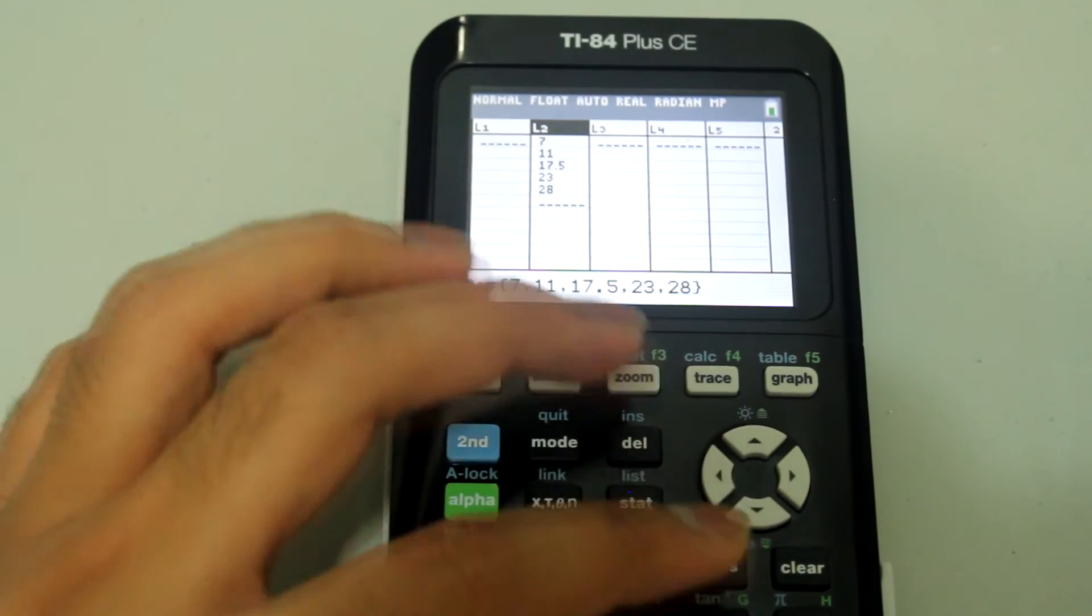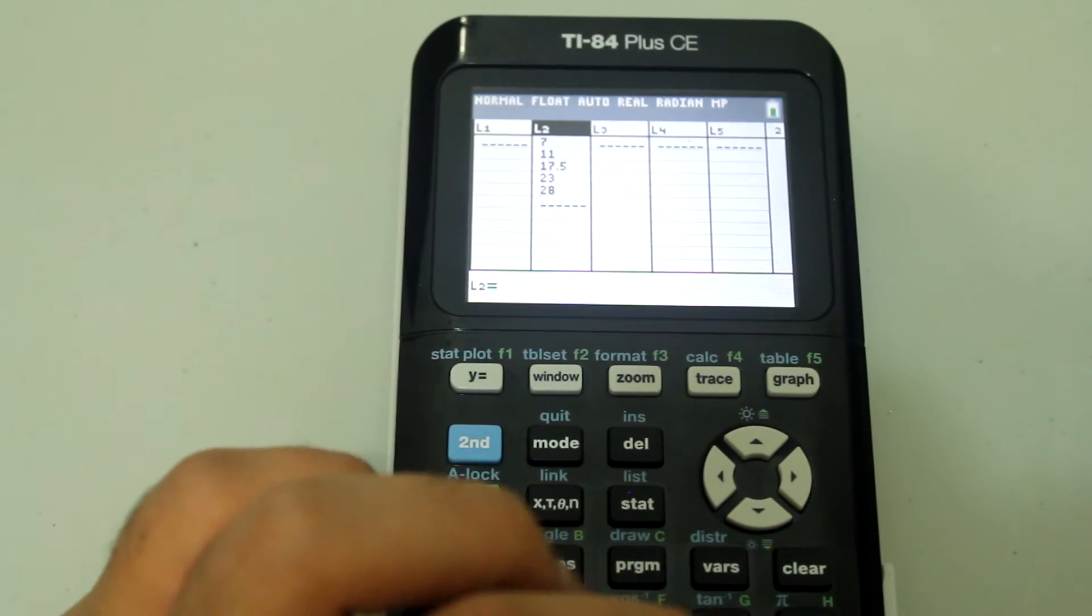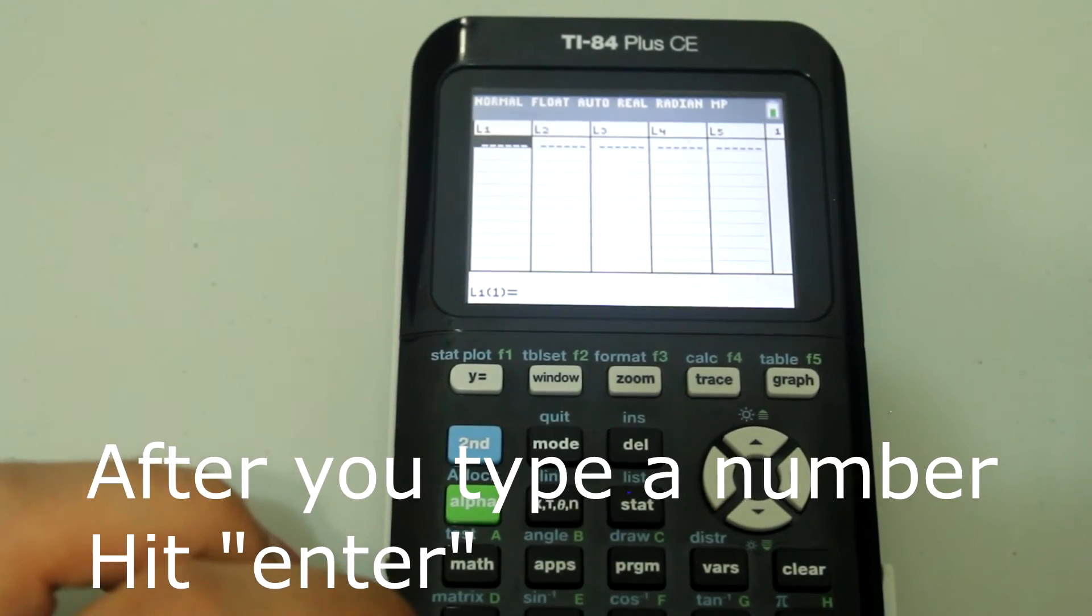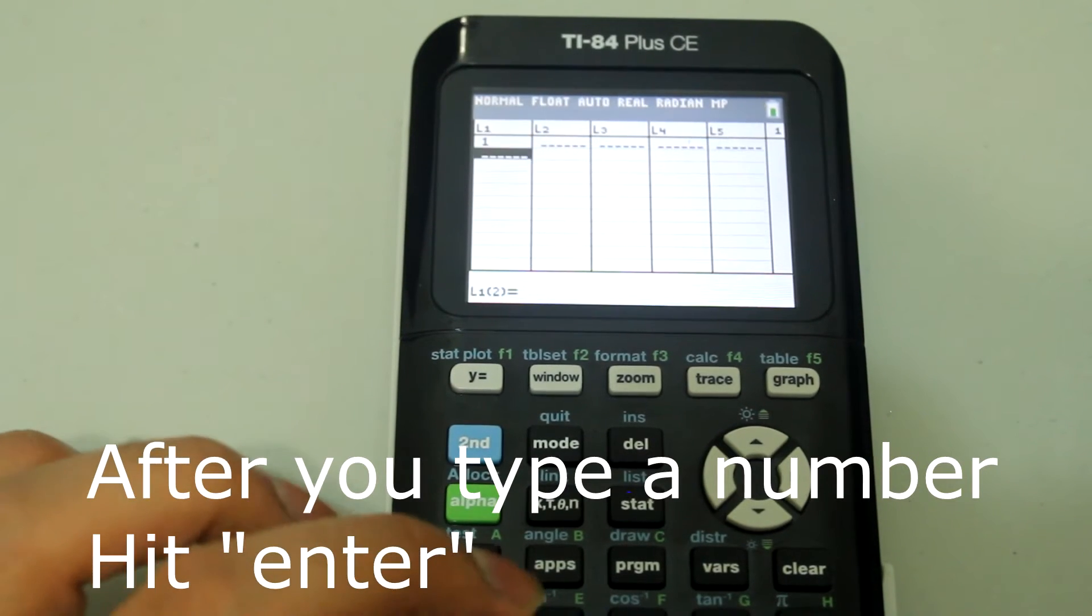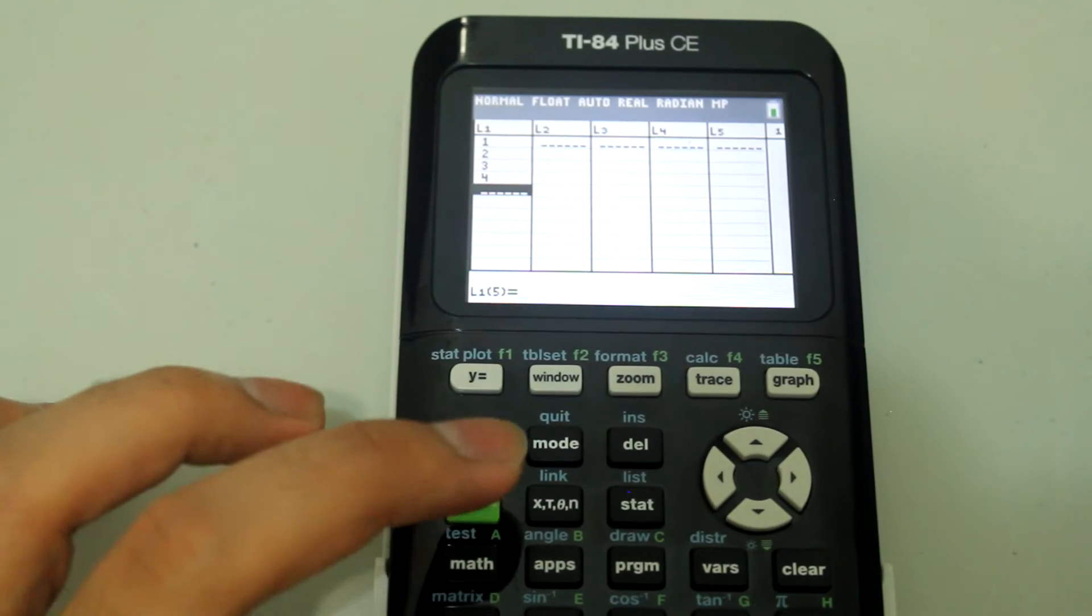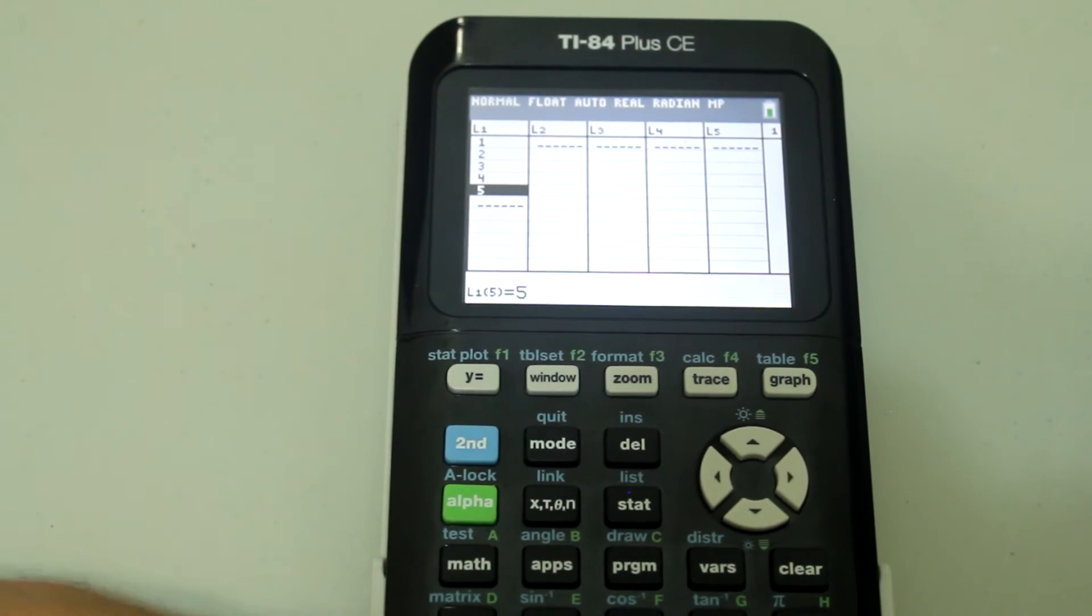So let's just clear L2 and input our new data and hit enter after clear. Now we just want to input the data real quick. And use the arrow to move.